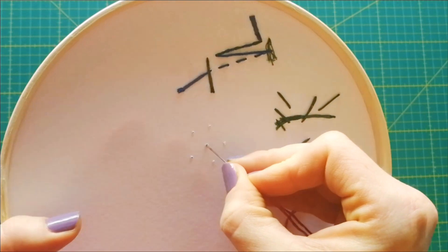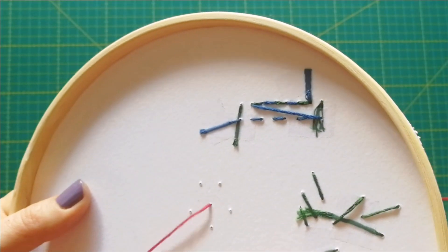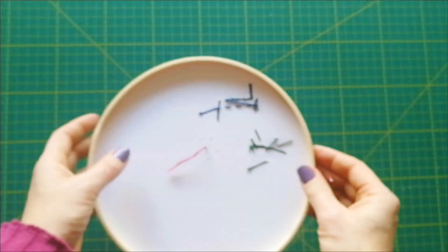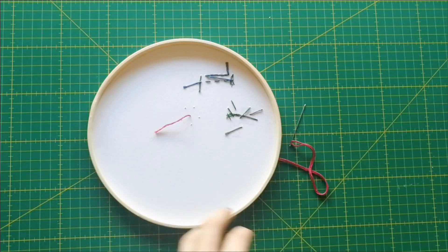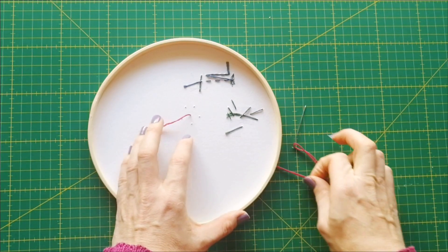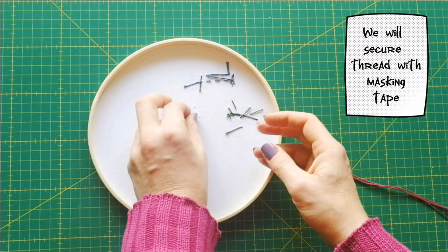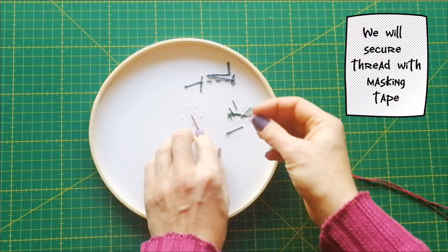After we are done, we turn the embroidery hoop around and fix our thread with masking tape. I will be using 6-strand thread because I want my rose to be a little more bulky and more visible. You can use the color of thread of your choice.